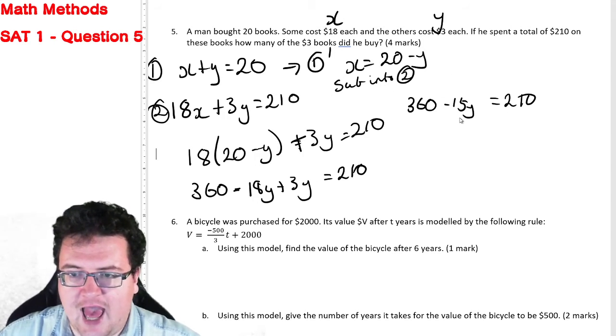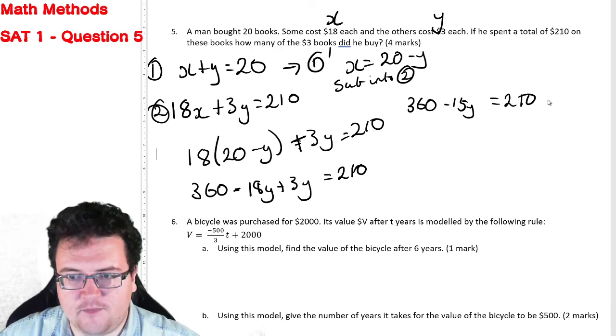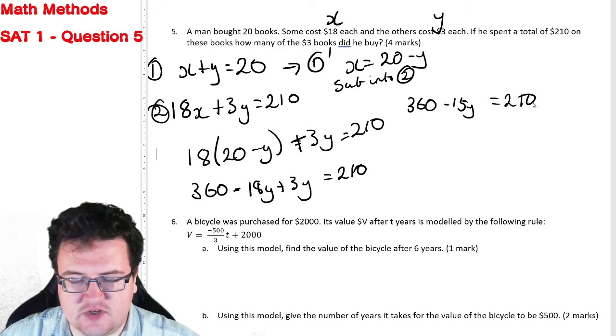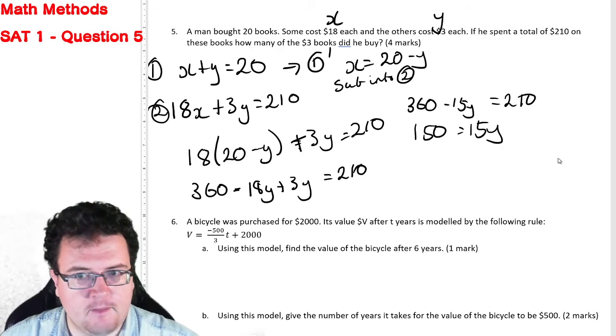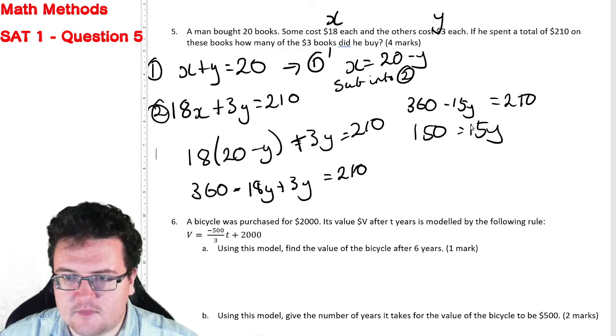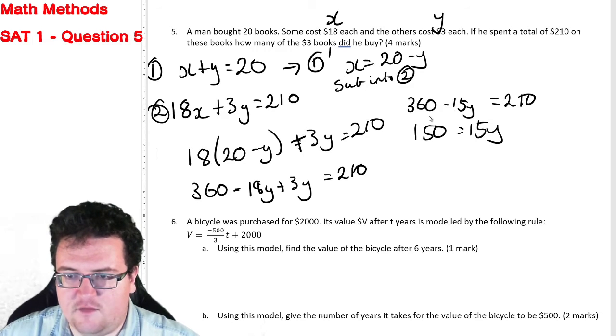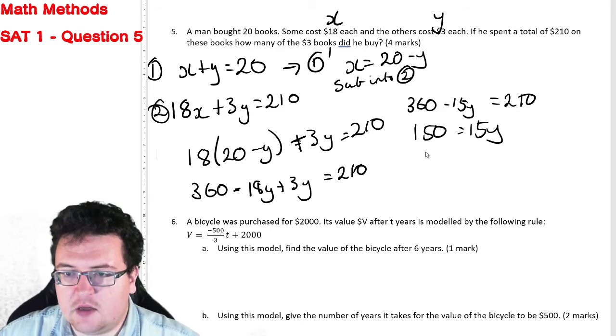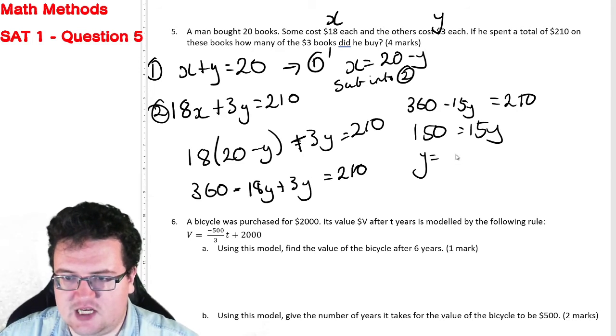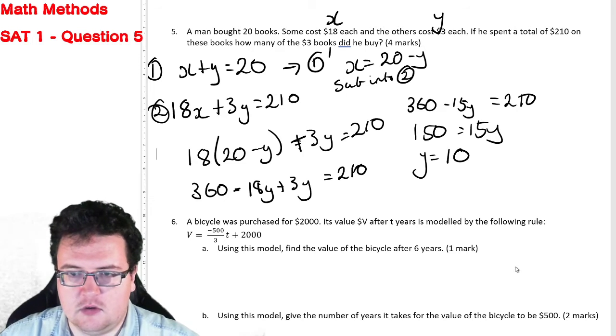If I add 15Y to both sides and subtract 210 from both sides, I come up with 150 equals 15Y. So take that over there and that over there. It's like multiplying by negative 1 down the track. So if 150 equals 15Y, therefore Y must equal 10.